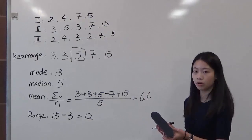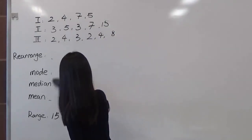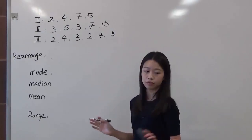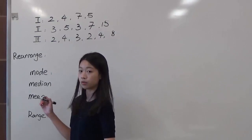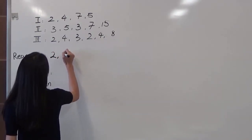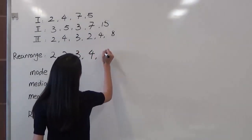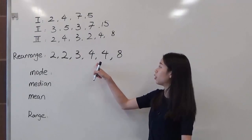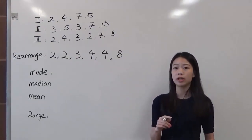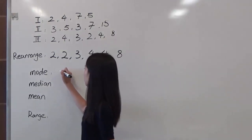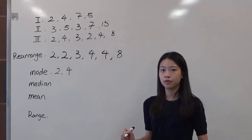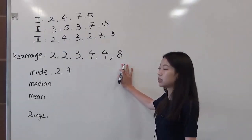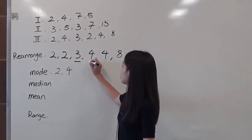Let's take a look at scenario 3. We have to rearrange again because the data set is in a different order. In ascending order, we have 2, 2, 3, 4, 4, and 8. In this scenario, numbers 2 and 4 each appear twice in the data set, so we have more than one mode. The mode of this data set will be 2 and 4. For the median, we have 6 numbers, so we choose the two most middle numbers — 3 and 4 — add them up and divide by 2.